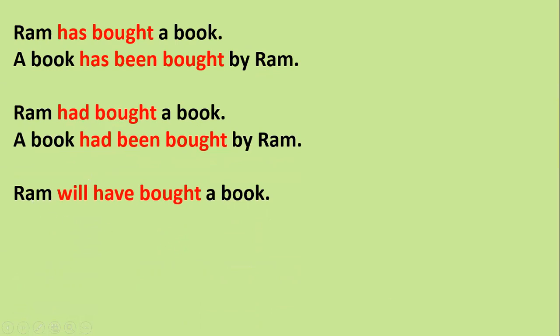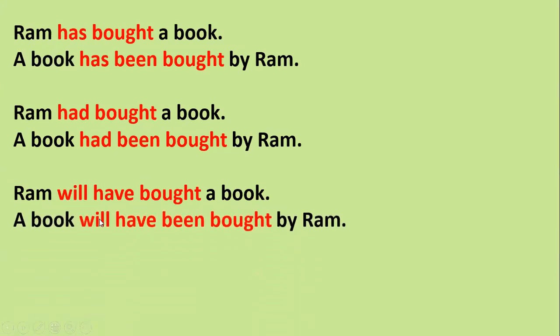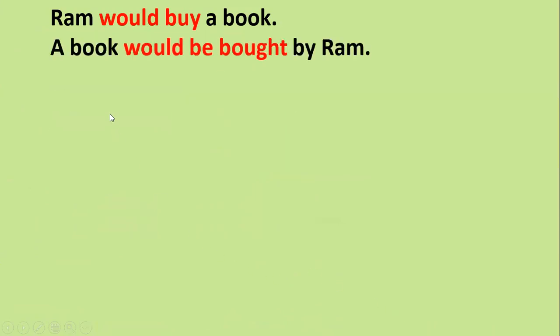Next: 'Ram will have bought a book' — future perfect. The passive is: 'A book will have been bought by Ram.' 'Will have bought' changes to 'will have been bought'. Then: 'Ram would buy a book' — conditional clause. The passive is: 'A book would be bought by Ram.' Throughout the sentences you can see a transformation of 'buy' into 'bought', that is past participle.